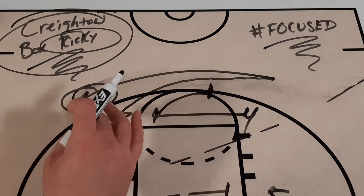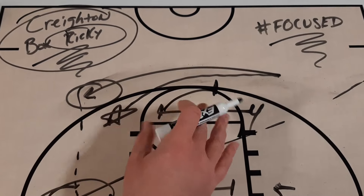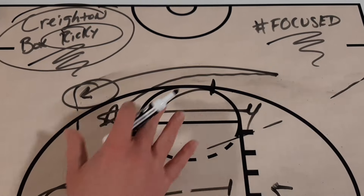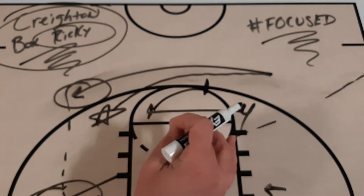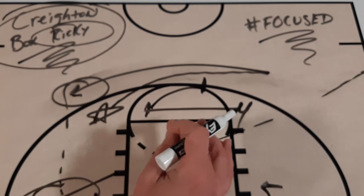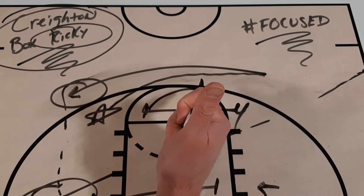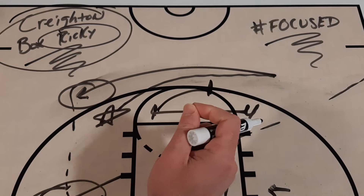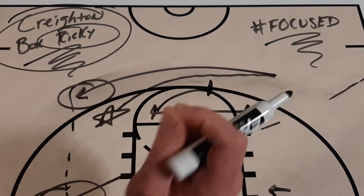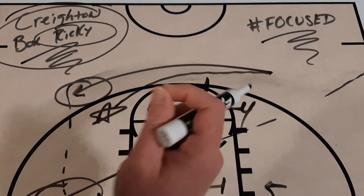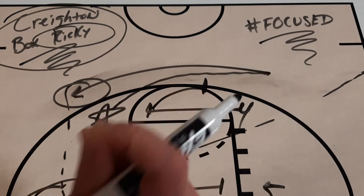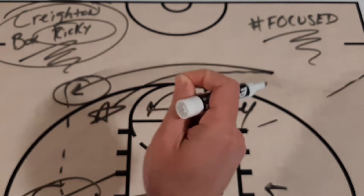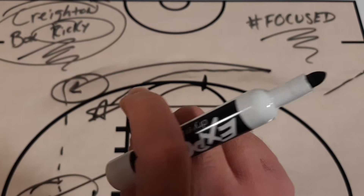You can see why — the screen and re-screen out of this box look will get you an open three-pointer, and there are other options you can use out of this set as well. If you like this breakdown, hit that like button, turn on notifications, and subscribe to Get Better Basketball on YouTube for more great video breakdowns each and every week. As always, get better every day.